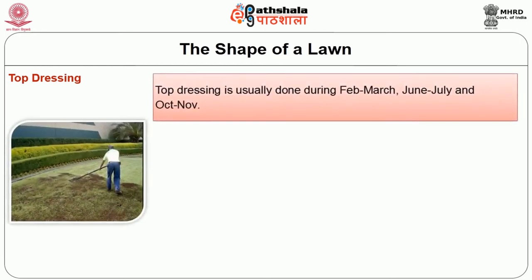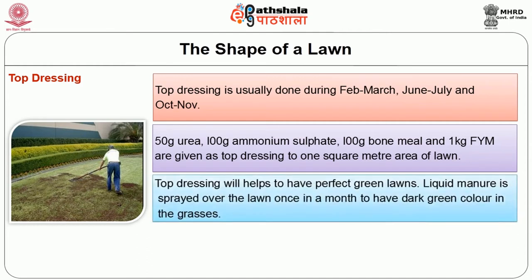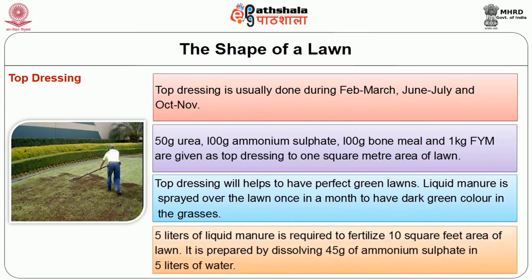Then top dressing. Top dressing is usually done during February to March, or June to July, or October to November. 50 gram of urea, 100 gram of ammonium sulphate, 100 gram of bone meal and 1 kg of FYM are given as top dressing to 1 square meter area of lawn. Top dressing will help to have perfect green lawns. Liquid manure is sprayed over the lawn once in a month to have dark green color in the grasses. 5 litres of liquid manure is required to fertilize 10 square feet area of lawn. It is prepared by dissolving 45 gram of ammonium sulphate in 5 litres of water.